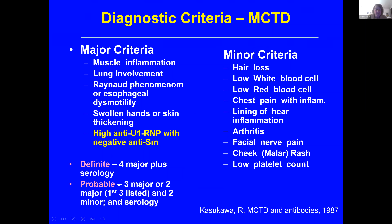Or if you were probable, you could have just some of these minor criteria. You can see there's a lot of criteria that are very typical to what happens in scleroderma: swollen hands and skin thickening, Raynaud's, esophageal dysmotility. But also there are things that happen in lupus with low white counts, low red blood cells, hair loss, and lots of different things.